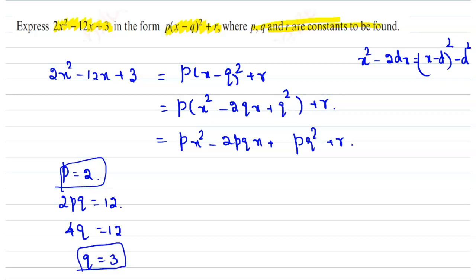Now equate the constant coefficient: pq² + r = 3. Substitute the values of p and q: 2(9) + r = 3, so 18 + r = 3, therefore r = -15.